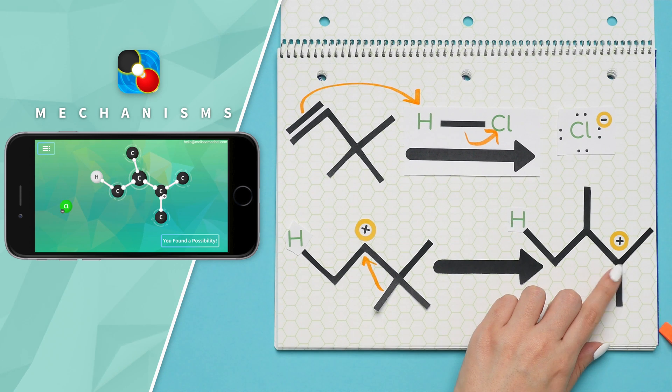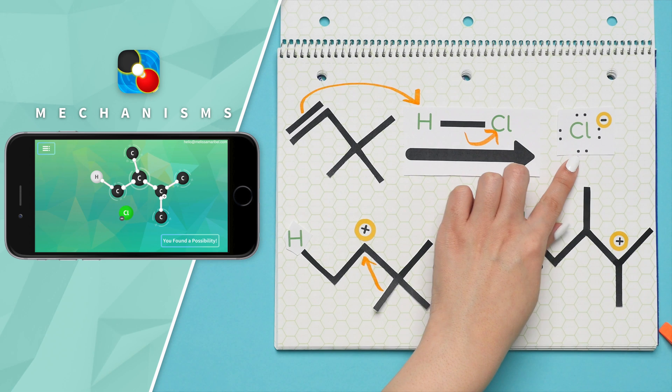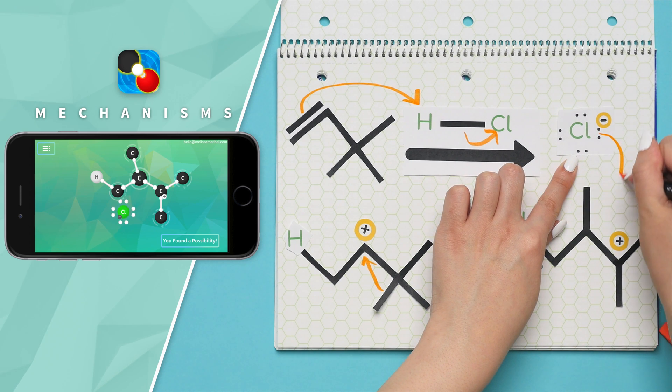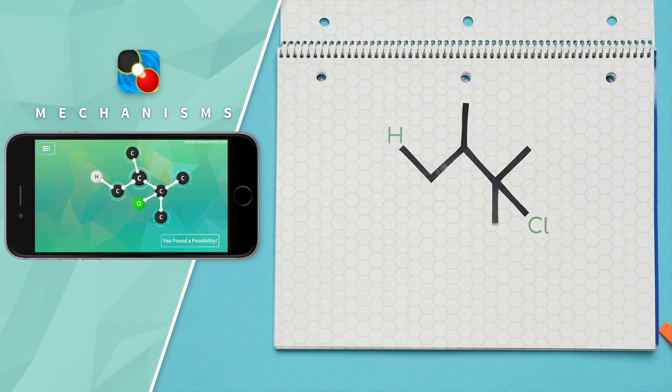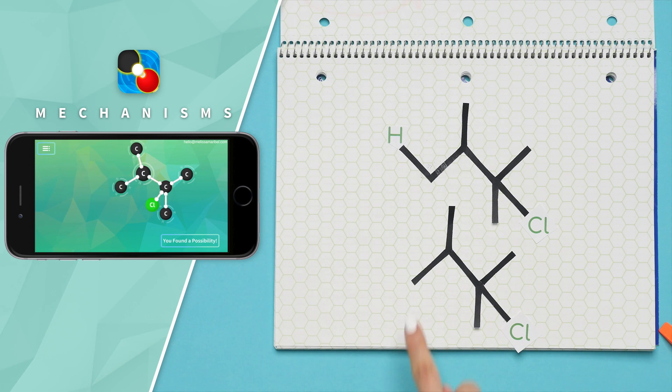Now that we have the most stable carbocation, we can have our nucleophile of chlorine attack the carbocation, which results in our product. And here's our product with the hydrogen we attached during the first step of protonation, and this is what it would look like if we didn't show the hydrogens.